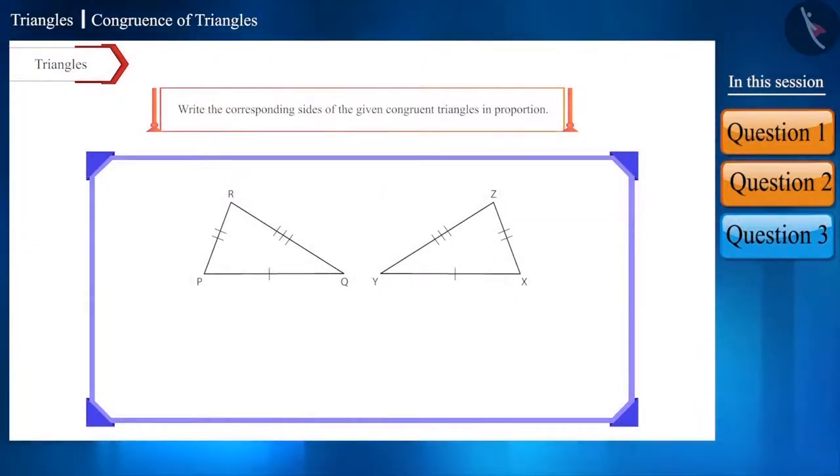Friends, first of all, keeping in mind the corresponding congruent sides of the two triangles, we will write the names of the two triangles in the same order in congruent form, and then we will write the proportions of their corresponding sides in the same order.